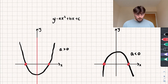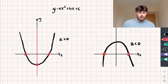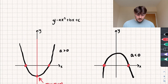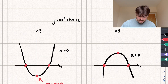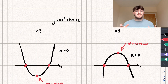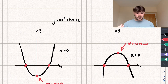We call the minimum point of the graph — when we have a positive coefficient of x squared — the minimum. In a similar way, the point where the graph reaches its highest value when the coefficient of x squared is negative is called the maximum point. The minimum or maximum point also happens to be at the line of symmetry, so it's directly in between the two roots.